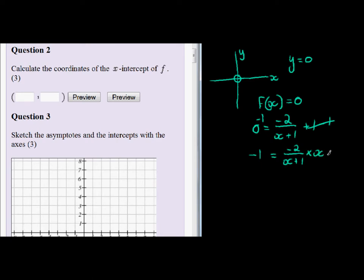So we multiply by (x+1) on both sides and this simplifies to -x minus 1 equals, on this side, we're just left with -2.